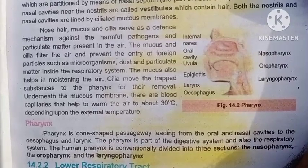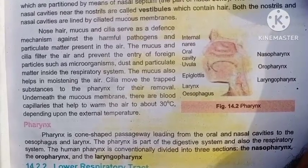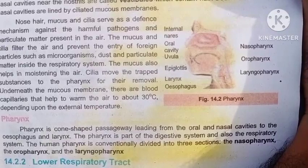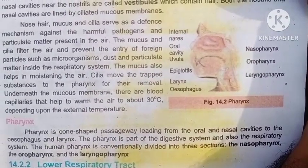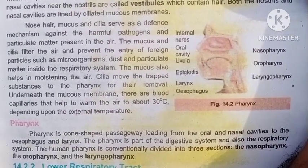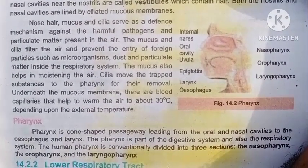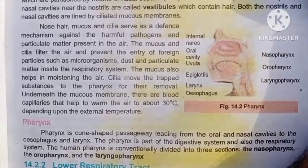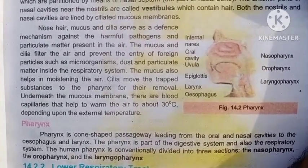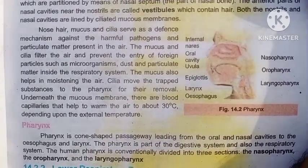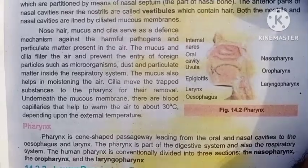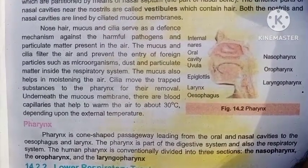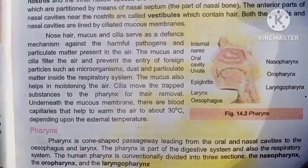The human pharynx is conventionally divided into three sections: the nasopharynx, oropharynx, and laryngopharynx. That covers the upper respiratory system. In the next part of the video we will discuss the lower respiratory system of the human being.